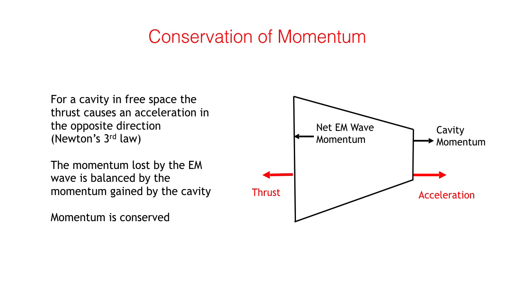Thus the momentum gained by an accelerating cavity in one direction is balanced by the momentum lost by the electromagnetic wave. Note that if the thrust is constrained, for instance by a force measurement system, acceleration is replaced by a reaction force. This reaction force balances the thrust, and so no net force is measured.